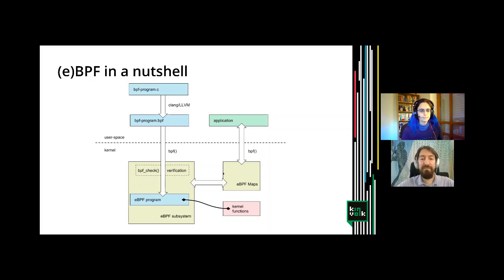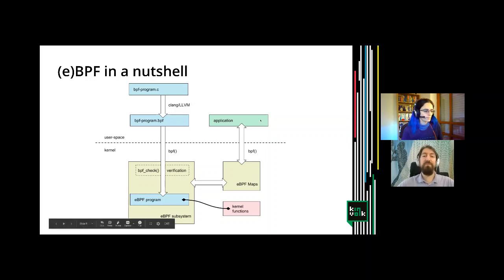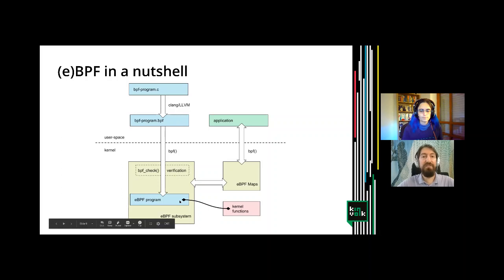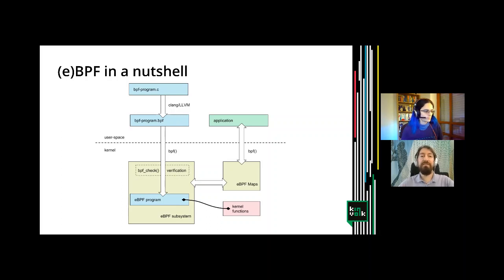The BPF program runs in a sandbox and can only execute safe instructions. It interacts with the tracer application through BPF maps — a kind of global variable shared between the kernel and user-space application. There are different types of maps, such as hash maps or arrays. Both the BPF program and the application can read and write those BPF maps, and that's how they communicate. The BPF program can only access specific BPF helper functions — safe functions designed for that purpose.